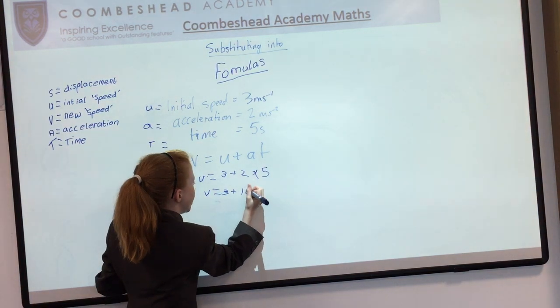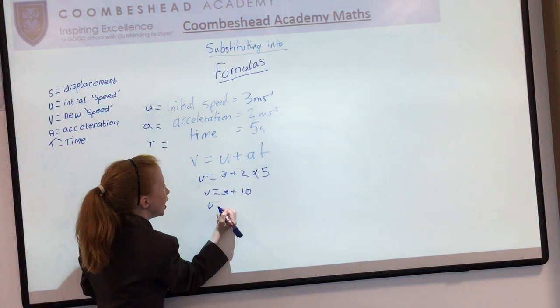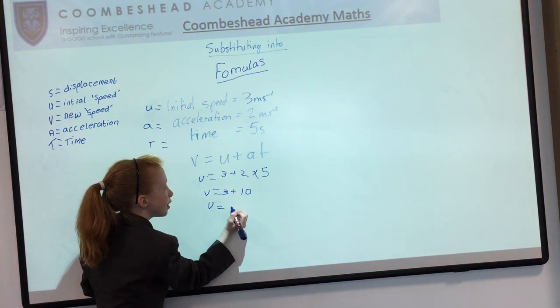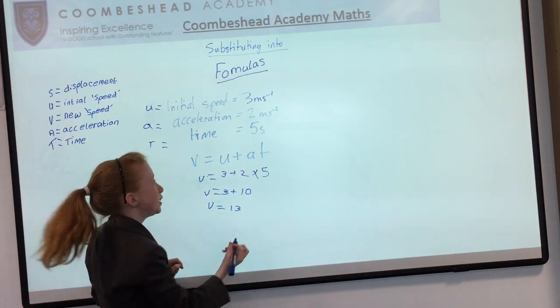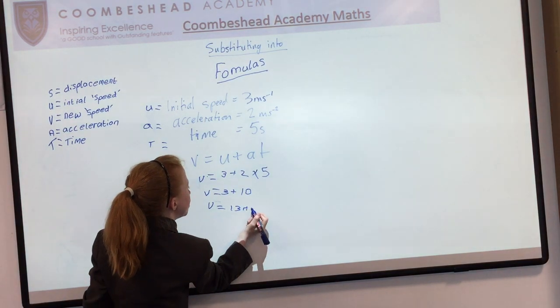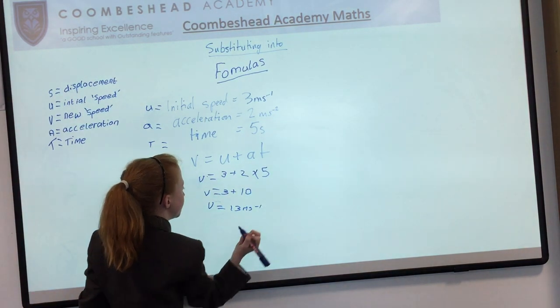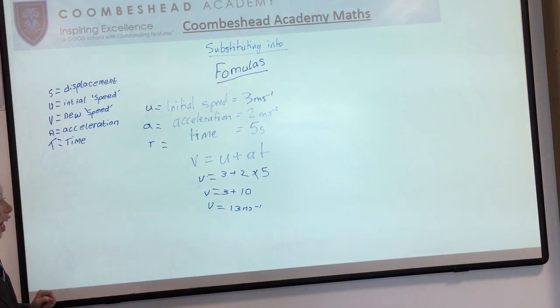So 10 plus 3 equals 13 meters per second. And that's our answer.